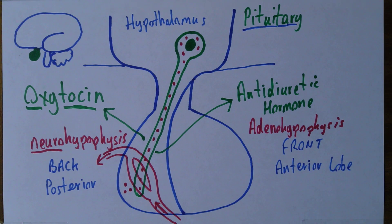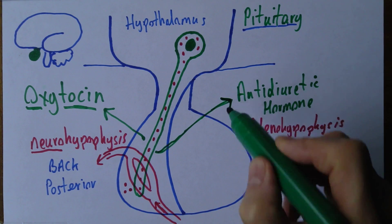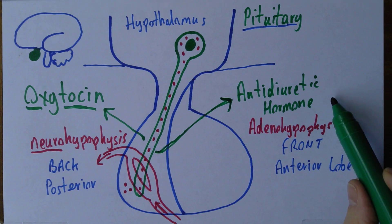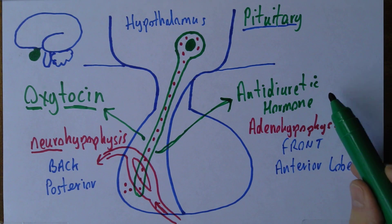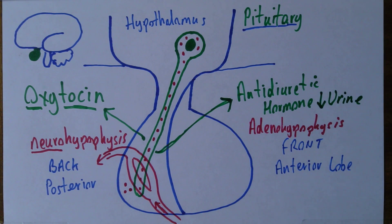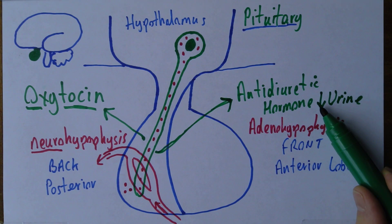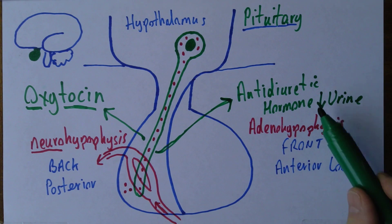The other hormone from the posterior lobe of the pituitary gland — the neurohypophysis — is the anti-diuretic hormone. A diuretic such as furosemide will increase urine volumes, so the anti-diuretic hormone is going to reduce urine volumes. It conserves water, and it will also reduce the amount of sweat that the body produces. So the anti-diuretic hormone is about conserving body water — reducing urine volumes and reducing sweating.